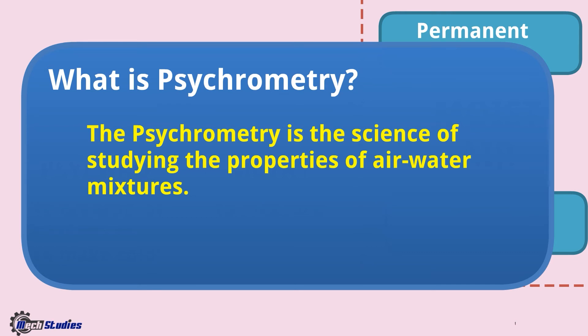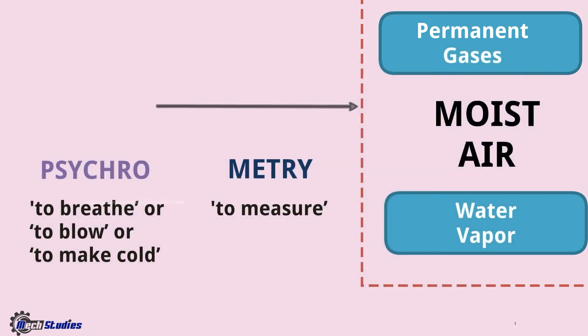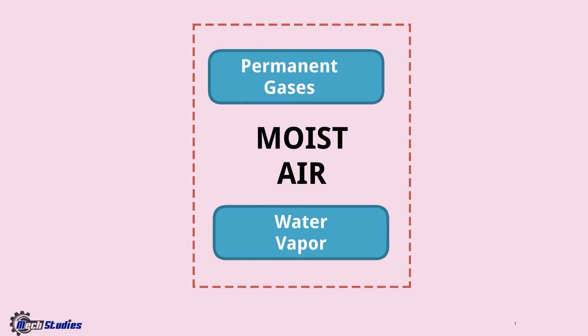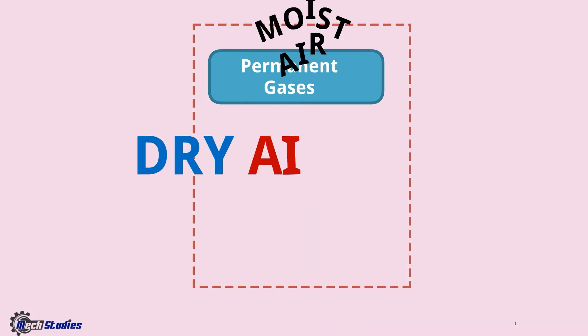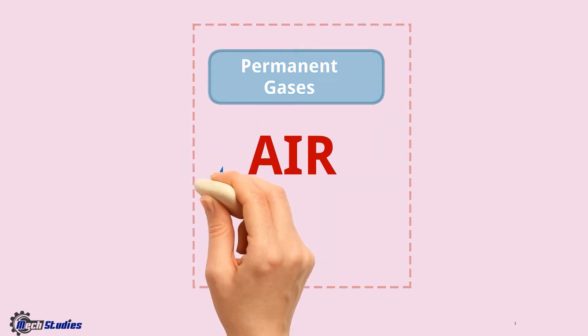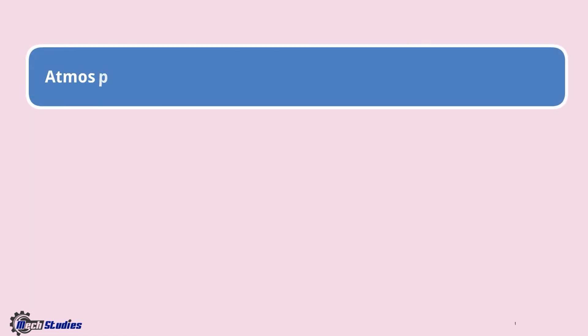So it helps to measure properties of air-water mixtures. Now, if we remove the water vapor from moist air, we get dry air. Let's see the summary. Atmospheric air means permanent gases plus pollutants plus water vapor.